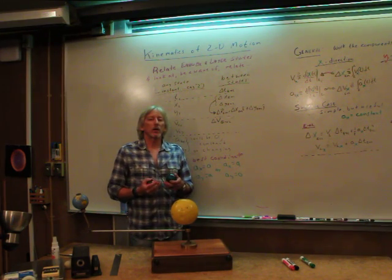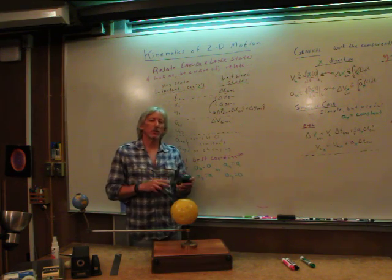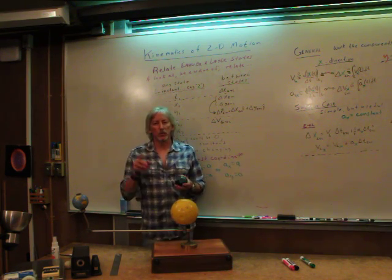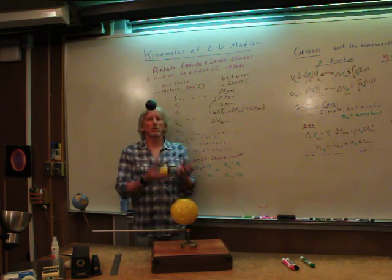We've learned how to break vectors down, two-dimensional vectors, into two parts, into components. Add them, represent them as arrows and variables, and so on. If we put those two together, we can describe motion in two dimensions.